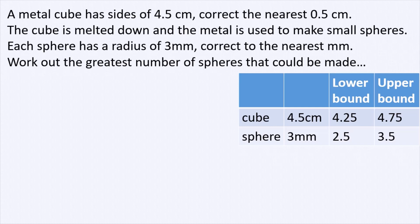Alright, so the lower bound for the side of the cube is 4.25 and the upper bound is 4.75, and the lower bound for the sphere is 2.5 and the upper bound is 3.5.